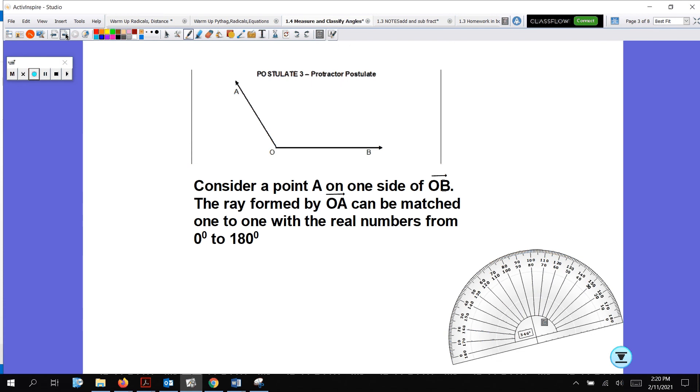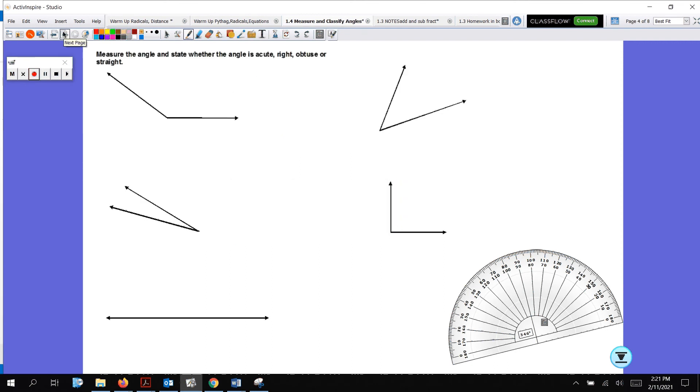There is a protractor postulate. This is a wordy definition that I got out of the book. Consider a point A on one side of ray OB. The rays formed by OA can be matched one-to-one with a real number from 0 degrees to 180 degrees. That means somewhere in here, we can measure this angle with our fancy protractor, which is the reason why I gave you all a fancy protractor.